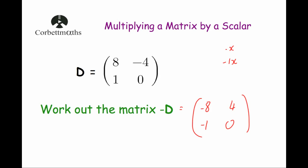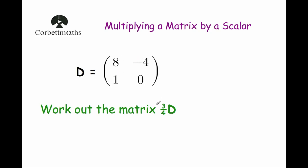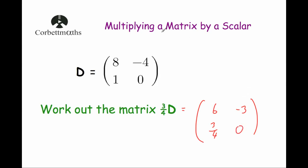Okay, our last question. We've got matrix D again — [8, -4; 1, 0] — and we've been asked to work out the matrix three-quarters D, meaning we multiply all elements by three-quarters. Three-quarters times 8 is 6. Three-quarters times minus 4 is minus 3, because three-quarters of 4 is 3. Three-quarters times 1 is three-quarters. And three-quarters times 0 is 0. So to multiply a matrix by a scalar, all you need to do is multiply each element by that scalar number.